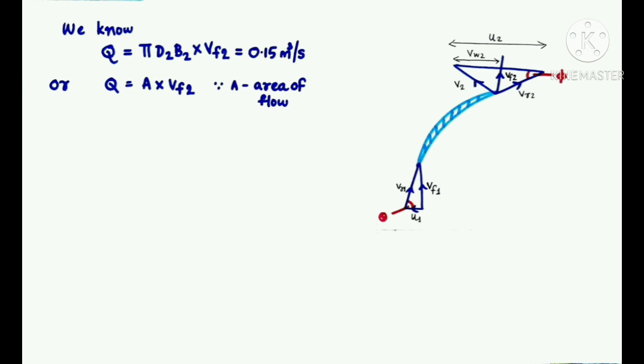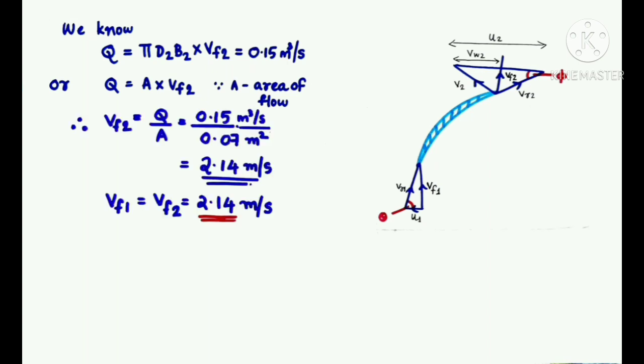Now, we know that discharge is equal to area of flow into velocity of flow. So, in order to find the velocity of flow at outlet, we take this formula and rearrange it. That is Vf2 = Q/A = 0.15/0.07 which is equal to 2.14 m/s. Vf1 and Vf2 are equal to 2.14 m/s.